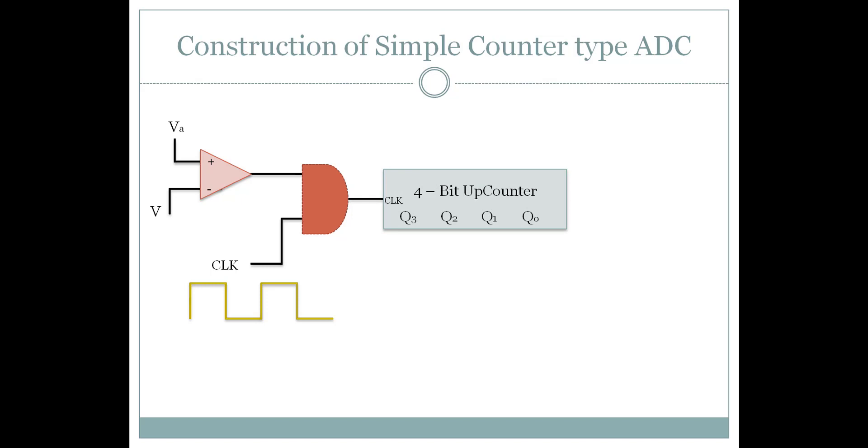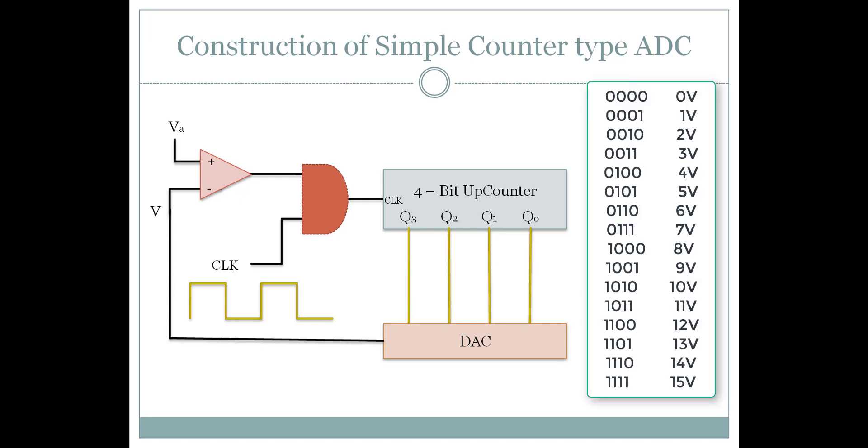The output of this counter is sent to a digital to analog converter to be set as the new reference to the comparator. For now we must just assume that a digital to analog converter converts the digital values to analog value. We will discuss it in much detail in the later videos.